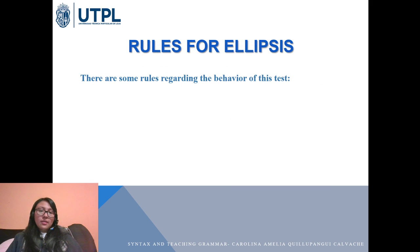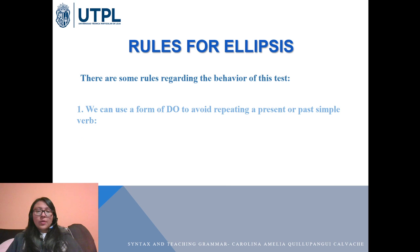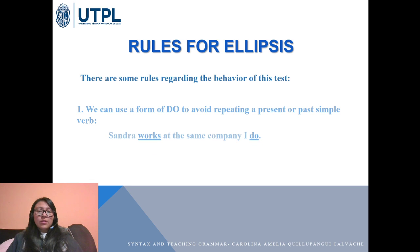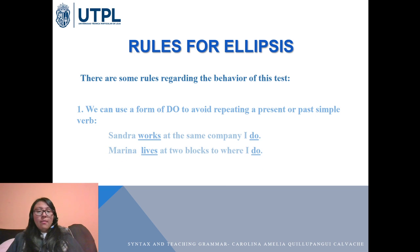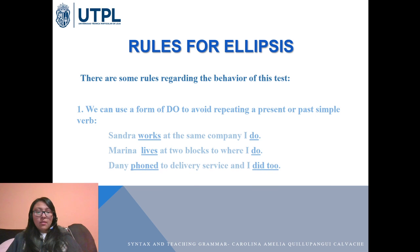Rules for ellipsis. First, we can use a form of 'do' to avoid repeating a present or past simple verb. For example: 'Sandra works at the same company as I do' — here 'works' is the verb we are replacing with 'do.' Another example: 'Marina leaves two blocks to where I do' — the verb 'leaves' is replaced with 'do,' and the sentence remains complete.